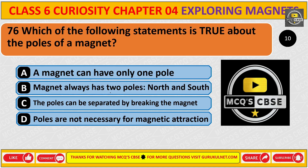Question number 76: Which of the following statement is true about the poles of a magnet? The correct answer is B. A magnet always has two poles, North and South pole.